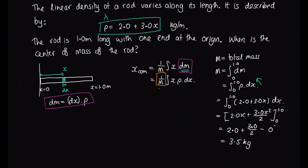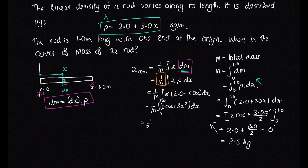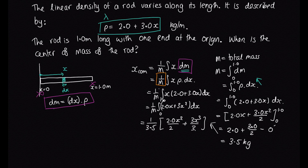Now we have M and can substitute back. We have 1 over M times the integral of x(2 + 3x) dx, which expands to the integral of (2x + 3x²) dx from 0 to 1. Substituting M = 3.5, we integrate: the integral of 2x is 2x²/2, and the integral of 3x² is 3x³/3. The 2's and 3's cancel nicely.